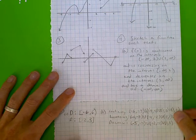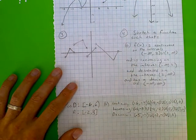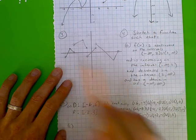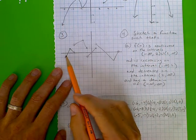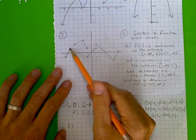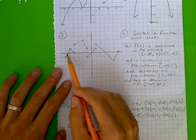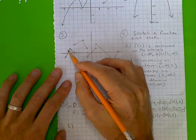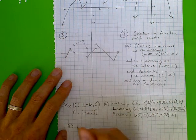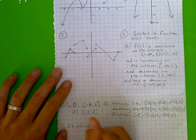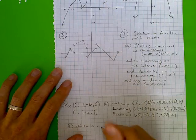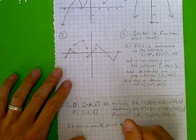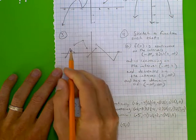Next, we want to look for any relative or absolute maxes or mins. A relative max is like the top of a hill, and a relative min is at the bottom of a valley. It has to be part of a continuous interval and where the function switches from increasing to decreasing. So there's a relative max at the point negative 5, 1. Do we have another relative max? Yes — at the point negative 2, 3.